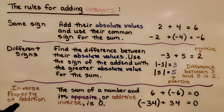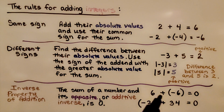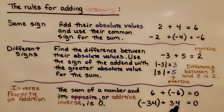For the inverse property of addition, the sum of a number and its opposite, or additive inverse, is zero. We don't need to use absolute value. We have a positive six plus a negative six — they're additive inverses, they're going to equal zero. We have a negative 34 plus a positive 34 — they're additive inverses, they equal zero.